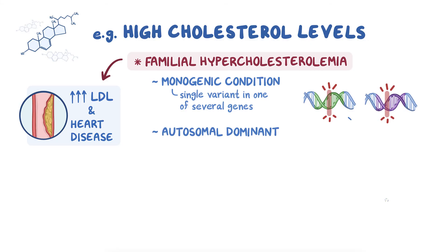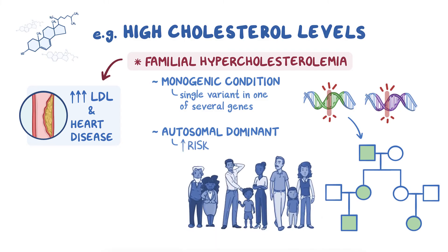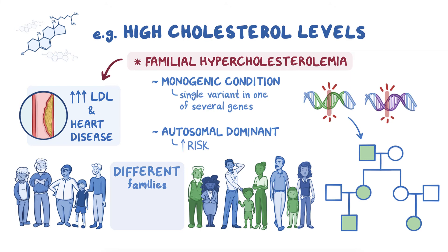Someone only needs one causal variant in one of these genes to have familial hypercholesterolemia and be at increased risk for high LDL cholesterol and heart disease. This same variant in the same gene gets passed down through the same family. But different families can have familial hypercholesterolemia caused by different variants in different genes.